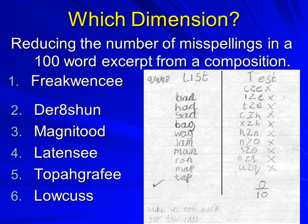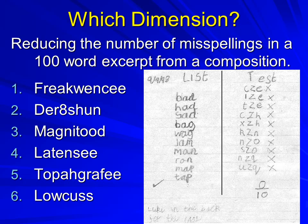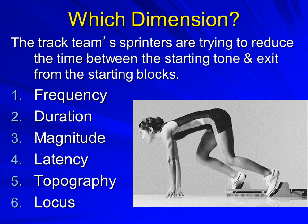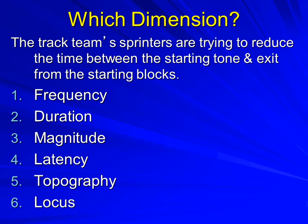Which dimension here? We're trying to reduce the number of misspellings in a hundred-word excerpt from a longer composition. We want to reduce the number — yes, the frequency, the number of errors — but we're also talking about topography: the form of the word is incorrect. So frequency and topography would both suffice. The track team sprinters are trying to get out of the blocks quicker when the starting tone sounds. Which dimension are they working on? Latency — the time between the starting tone and the feet being out of contact with the starting blocks.